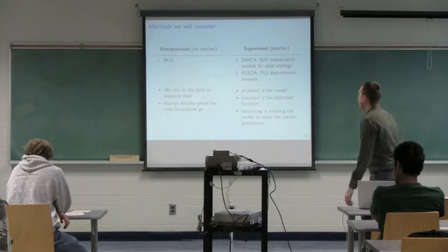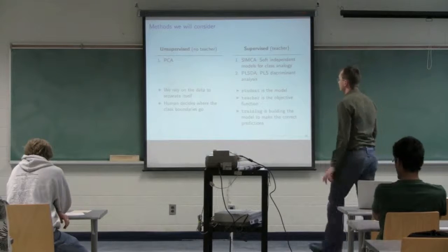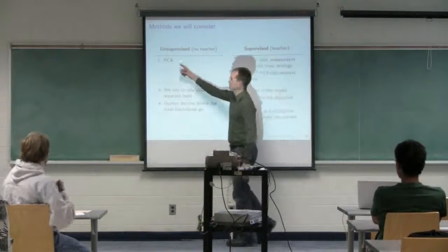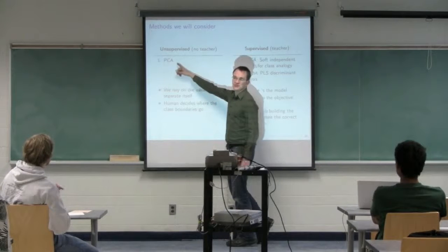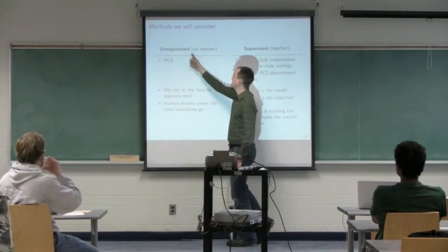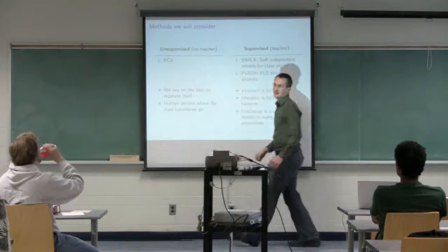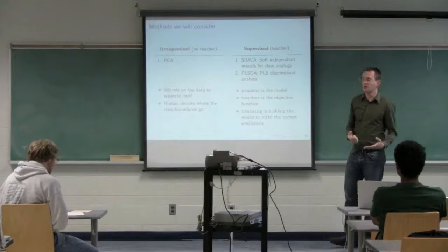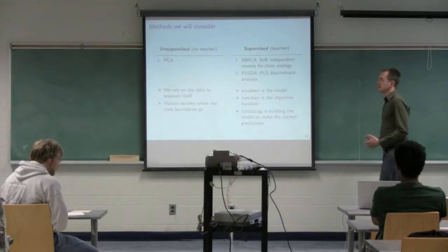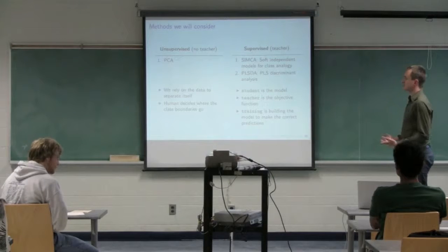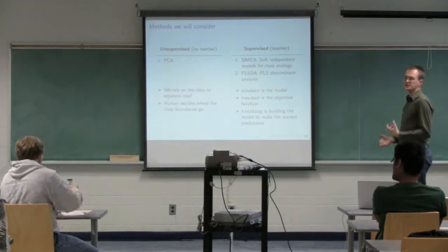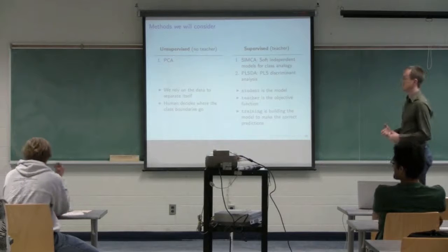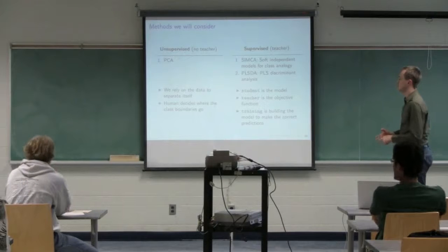We'll look at three methods. The first is simply PCA on the data — that's an unsupervised classifier. The PCA model is only built on the observations we use; we don't use the fact that observations belong to a single category. We're going to rely on the data to separate itself.